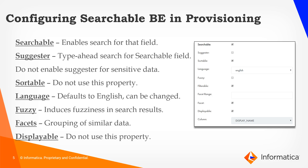You also have a sortable property, though you need not use this property. You can select the language to be set for the data, which will be used for indexing as well as for incoming requests. You can induce some fuzziness by selecting the fuzzy column. Depending on the business requirement, you can set a particular column as facet-enabled or not. You also have a displayable property, which you can choose to ignore at this point.